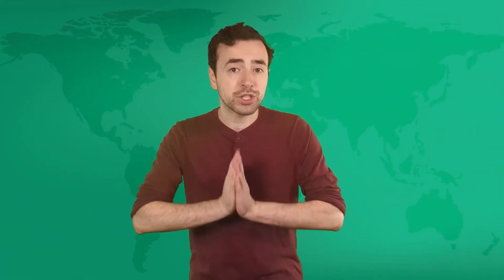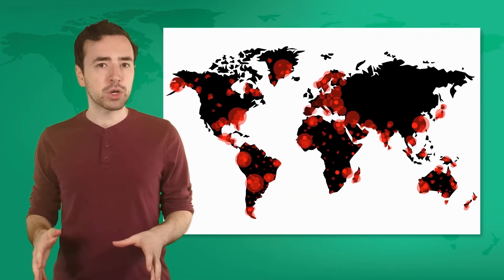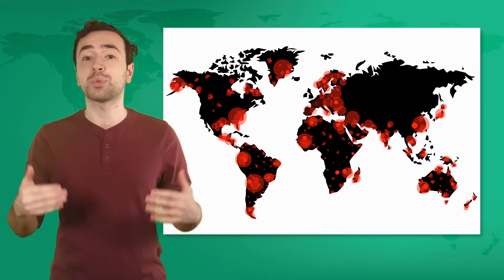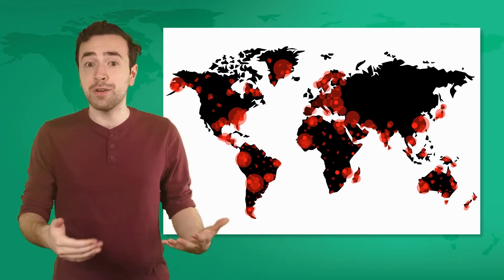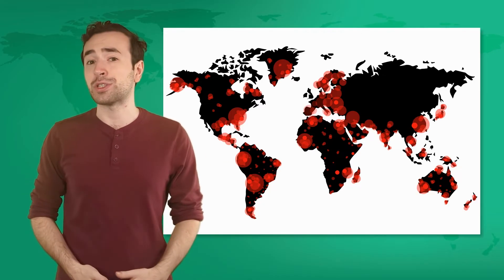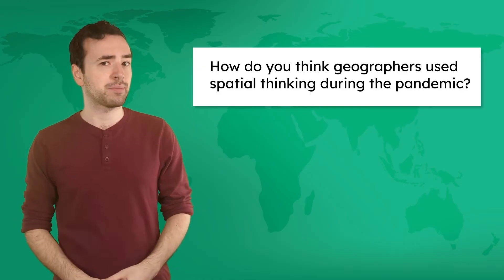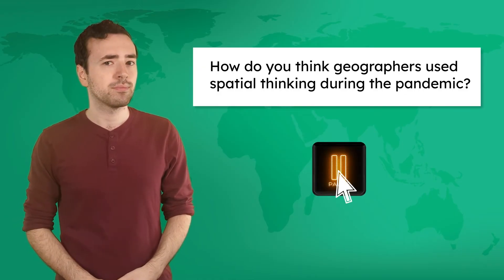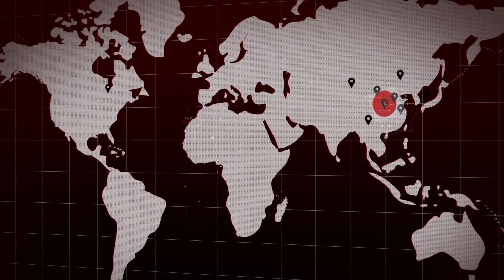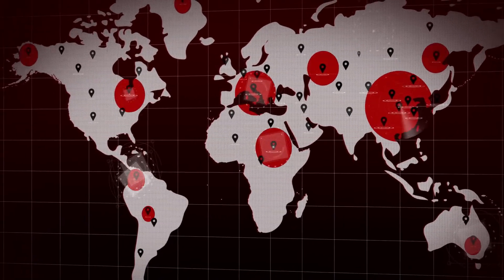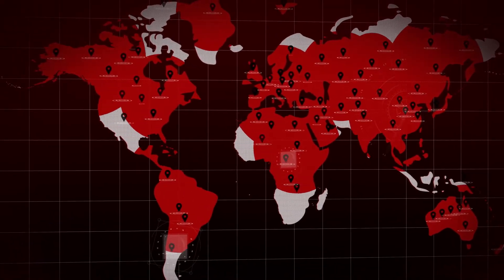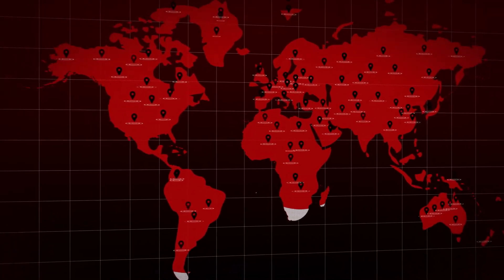Let's try out our geographers toolbox and apply it to a recent global issue — the COVID-19 pandemic. When the pandemic first emerged, geographers around the world were tasked with predicting the global impact of COVID-19 as the virus spread. How do you think geographers used spatial thinking during the pandemic? Geographers tracked the spatial distribution of positive COVID-19 cases at different scales as it spread across the globe.